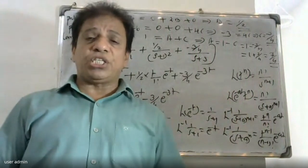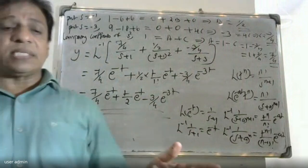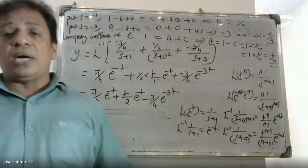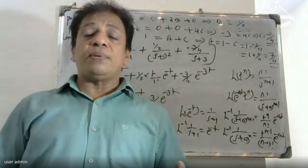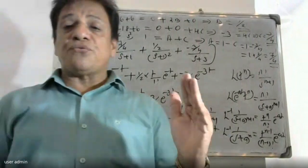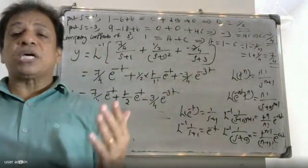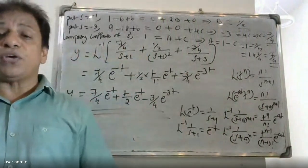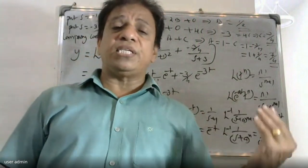In summary: given the initial conditions y(0) and y'(0), we substitute to get L{y}, then decompose into partial fractions to find A, B, and C using substitution and comparing coefficients of s. We then apply the inverse Laplace Transform to get the final solution.